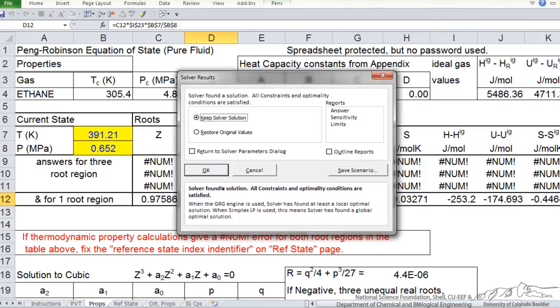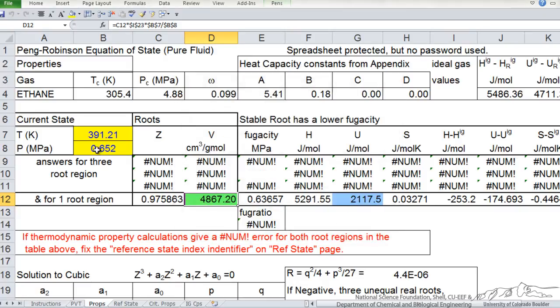And it says that it has found the solution, I tell it to keep the solution. So now in yellow are the final conditions, so notice internal energy, same value, the volume is four times, it says my final temperature, temperature is decreased, is 391.2 Kelvin, and the final pressure, 0.65 megapascals, or 6.52 bar. Solver makes it very easy to do this type of calculation using this equation of state spreadsheet.